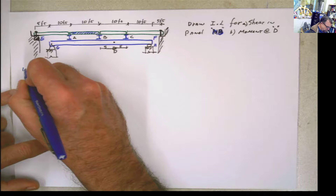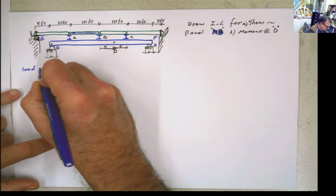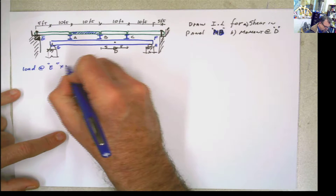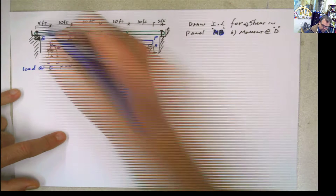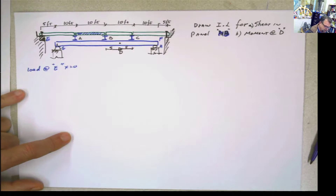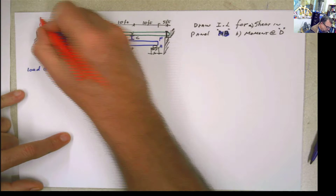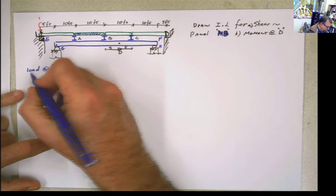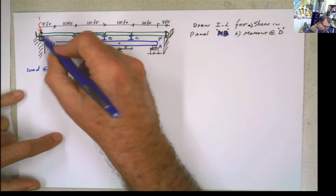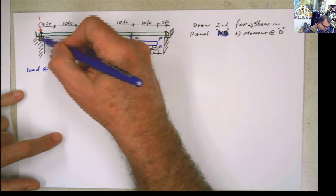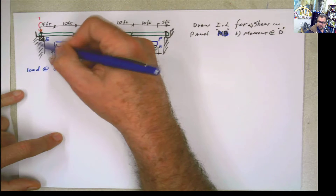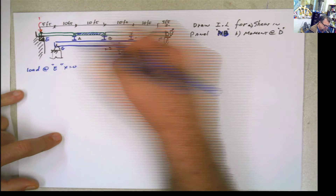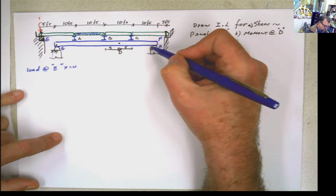First of all, I'm going to place the load at E, or x equals 0. What happens when the load is located at E? All the loads are absorbed by the support right here, and they are transferred to this pier or wall. Nothing is transferred to this girder here.